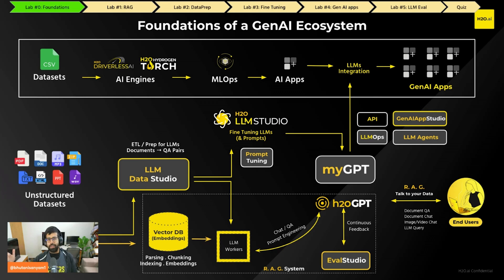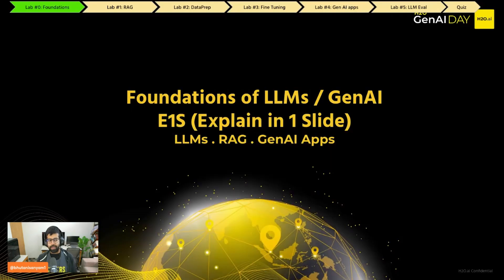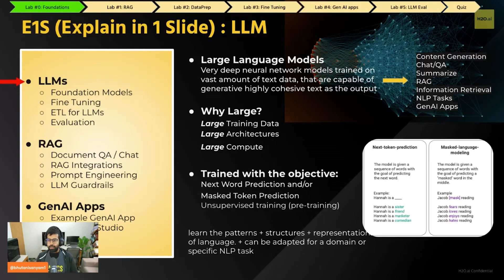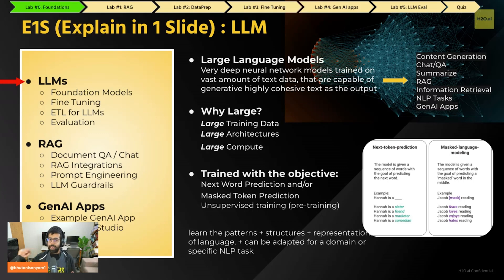Let's step back and look at the theory behind LLMs — I'll try to explain that in one slide or less. The topics are LLMs, RAG, and GenAI apps. Generally speaking, LLMs are models that start showing emergent capabilities — capabilities that aren't explicitly present in the training data. LLMs are known to be able to reason, think, and philosophize, even though they're never explicitly taught how to do that. At some point in training, they start showing this behavior.